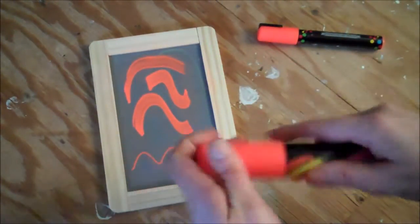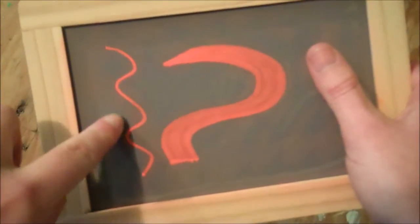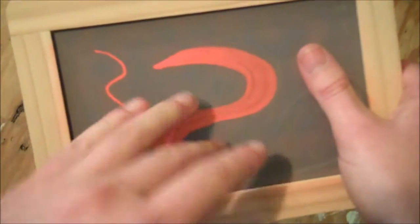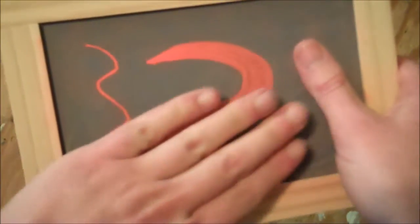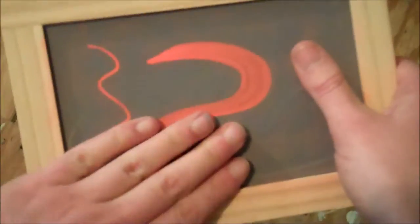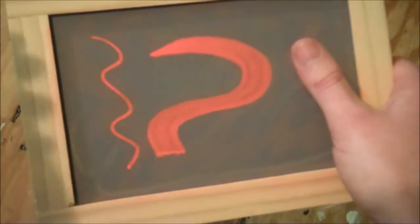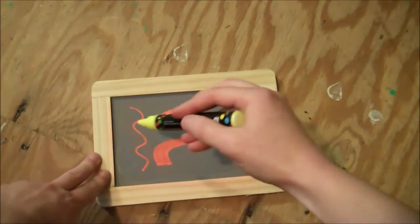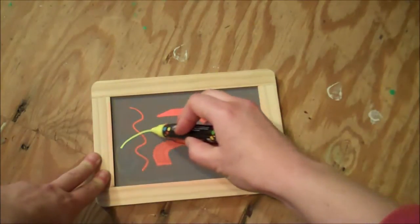The smaller markers have about a 42 second dry time and the bigger ones have about a minute to minute and a half dry time. Once they're dry, the nice thing about them is you can rub your hands across them and you don't rub anything off.